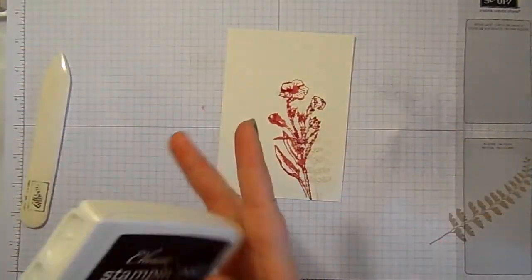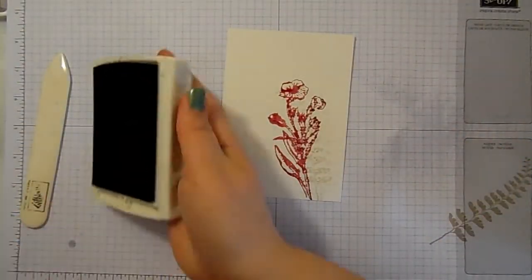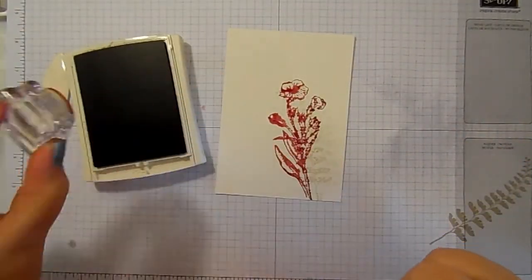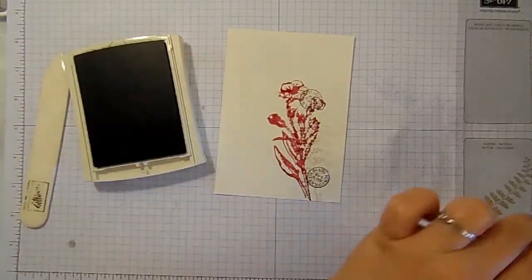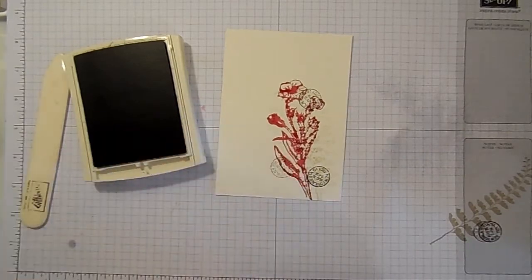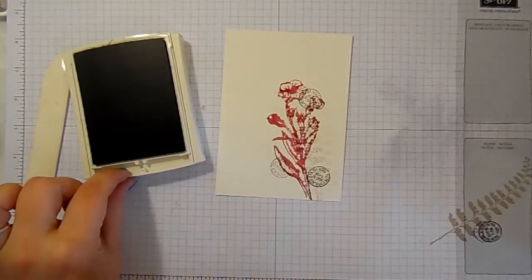I've then got early espresso ink, and I've got this tiny weeny little circle stamp, and I'm going to just stamp a few times around the flower image with that.